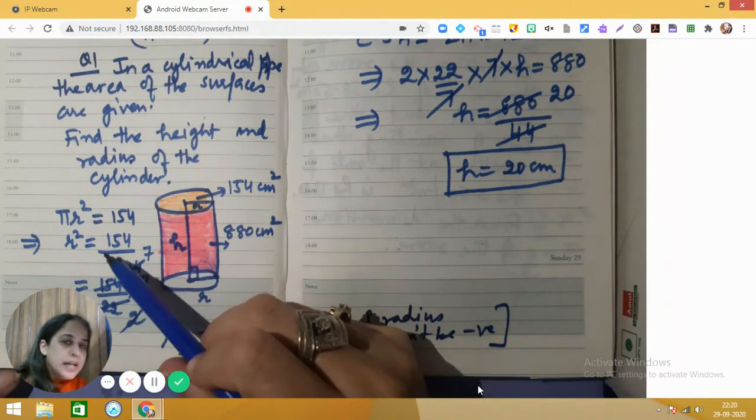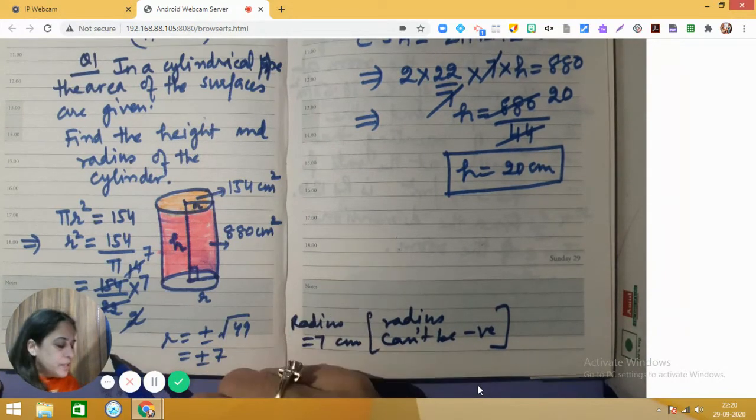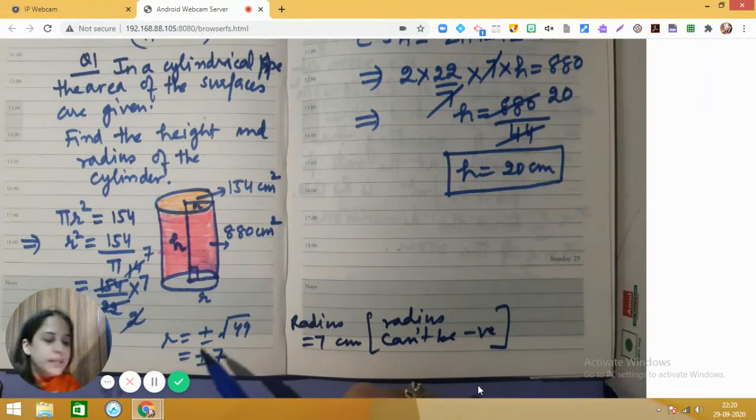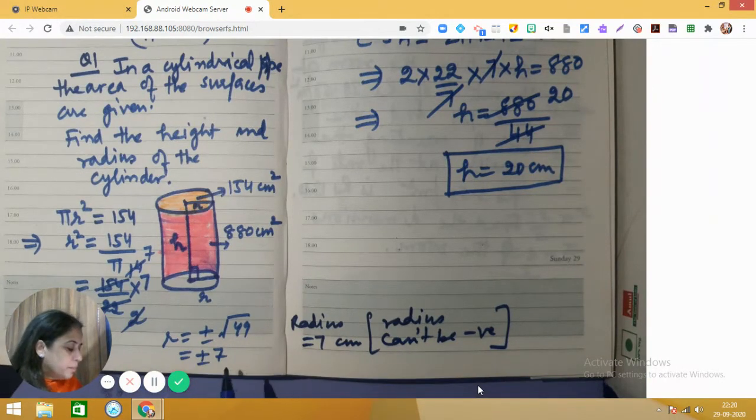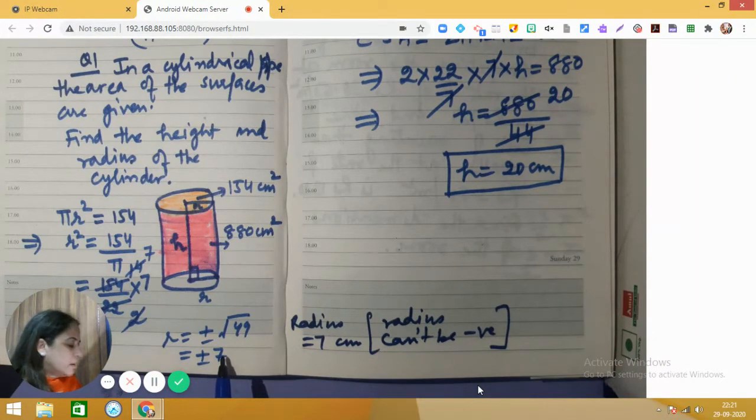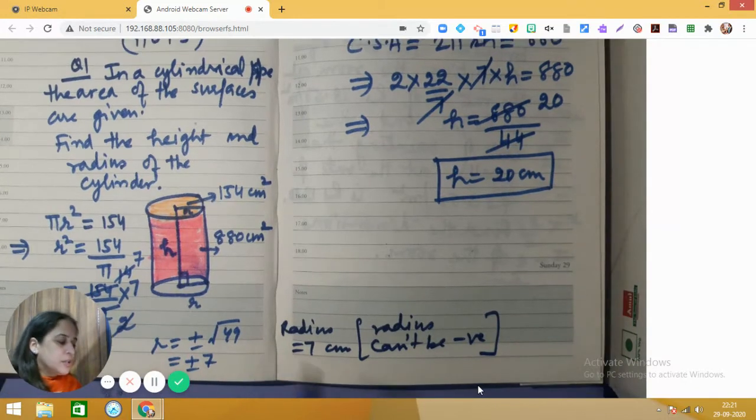We see that r square comes out to be 49, so r square is 49 means r is plus minus square root of 49, which is plus minus 7. But radius cannot be negative, so we take r is equal to 7 centimeter.